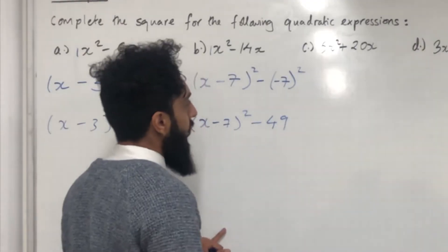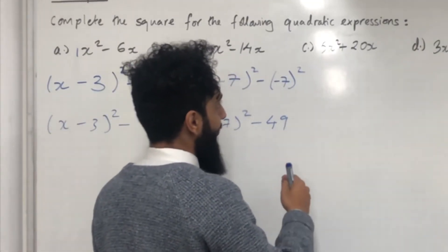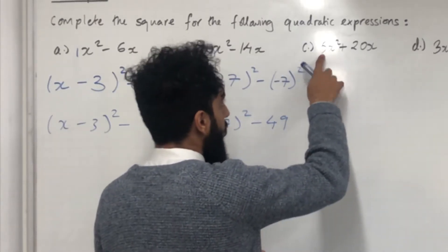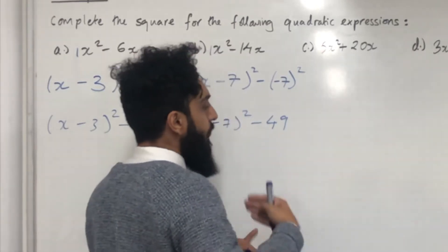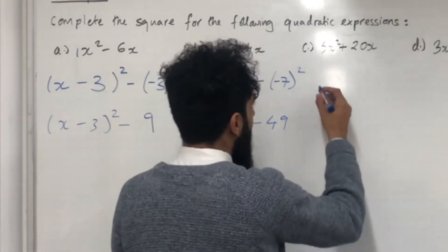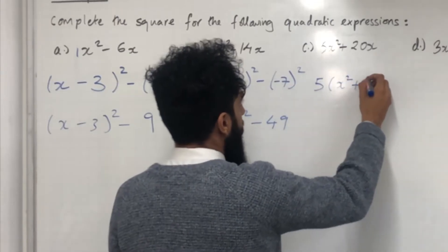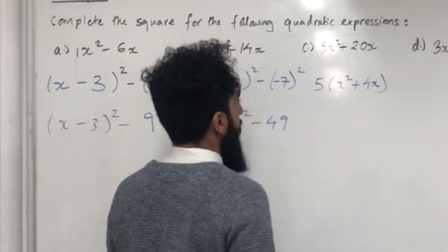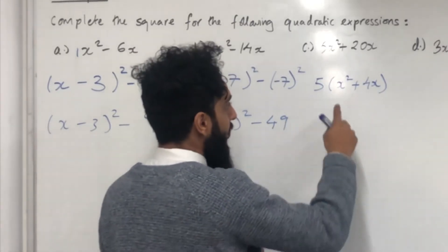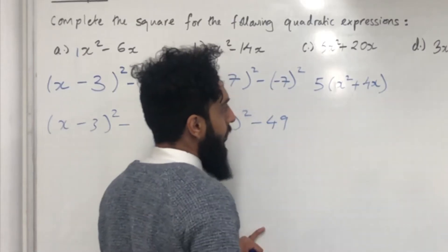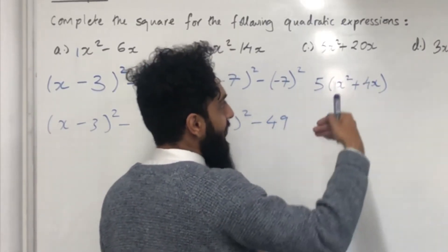Moving on to Part C. The first step is to check the coefficient of x squared. In this case it is 5, the number in front of x squared. So we need to first factorize. We take out the 5, giving 5(x squared + 4x). Now looking at the coefficient of x squared inside the bracket, it is 1, so we can go ahead and complete the square on the quadratic inside the bracket.